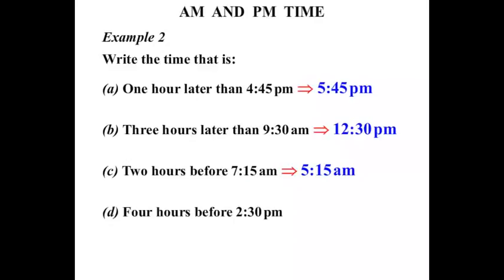What about four hours before 2:30 PM? Well 2:30 PM, that's after midday, but if we go back four hours we'd expect to finish off in the morning. So let's think: 2:30, let's go back an hour at a time. 2:30 back one hour would be 1:30. Back another hour 12:30. Back another hour 11:30, and back one more hour would be 10:30. So it would be 10:30 AM.